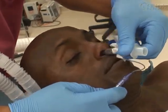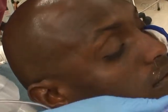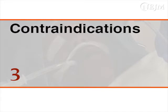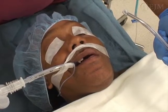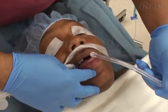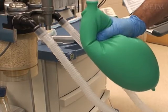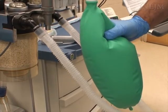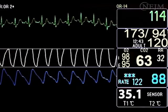Endotracheal extubation is indicated when the clinical conditions that required airway protection with an endotracheal tube or that required mechanical ventilation are no longer present. Extubation is contraindicated when the patient's ability to protect the airway is impaired — that is, the patient does not have protective airway reflexes — or when the patient cannot maintain adequate spontaneous respiration. That is, the patient has persistent respiratory muscle weakness, hypoxemia, or hypercarbia.